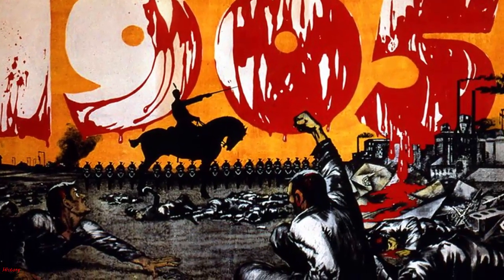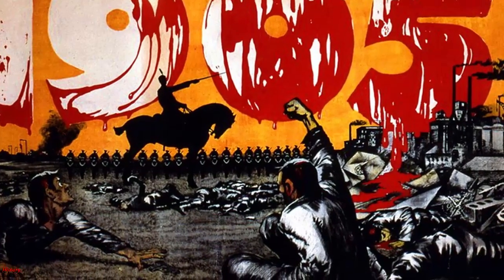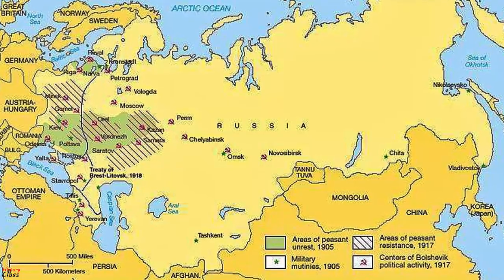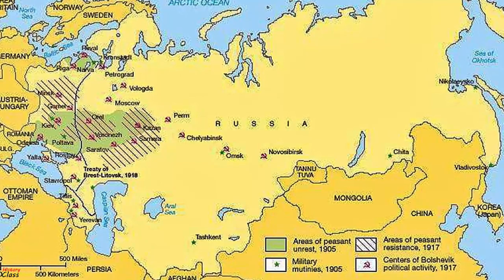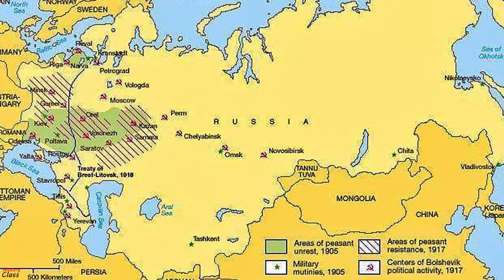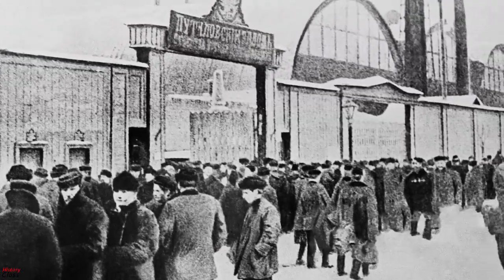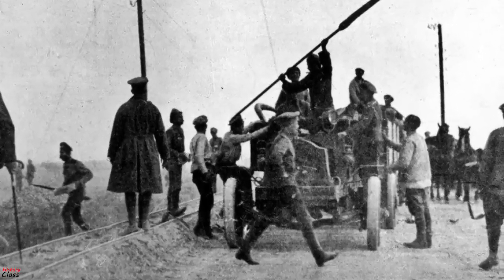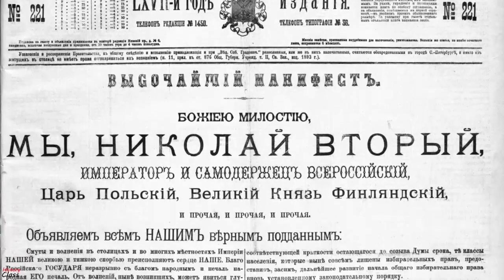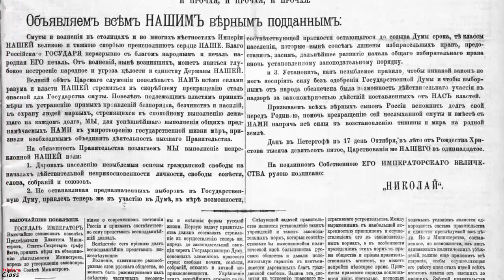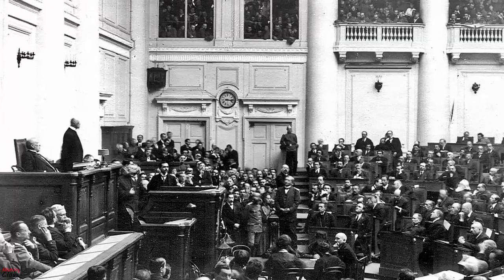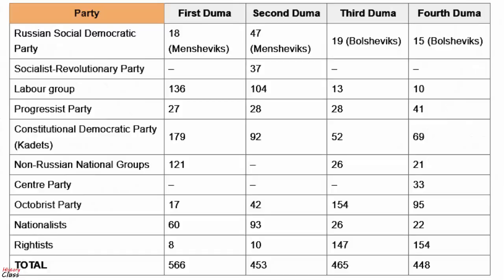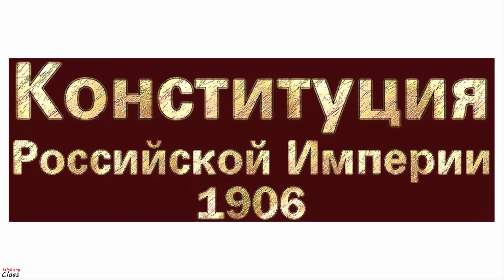The Russian Revolution of 1905 was a wave of mass political and social unrest that spread through vast areas of the Russian Empire, some of which was directed at the government. It included worker strikes, peasant unrest, and military mutinies. It led to constitutional reform, namely the October Manifesto, including the establishment of the State Duma, the multi-party system, and the Russian Constitution of 1906.